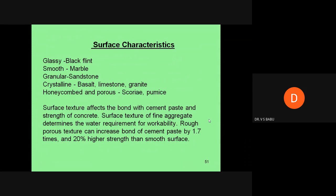Surface characteristics: glassy and black flint are smooth; granular and crystalline surfaces exist; honey-combed and porous materials like pumice are generally not used as concrete aggregates.